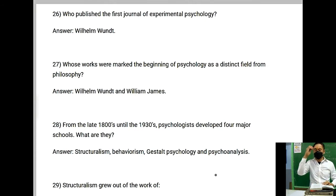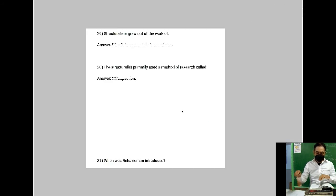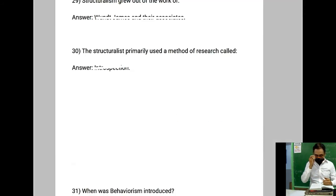Number 28: From the late 1800s until 1930s, psychologists developed four major schools. What they are? Number 29: Structuralism grew out of the work of? You might wonder why I didn't erase the answer. Well that's a bonus for you guys, from me.